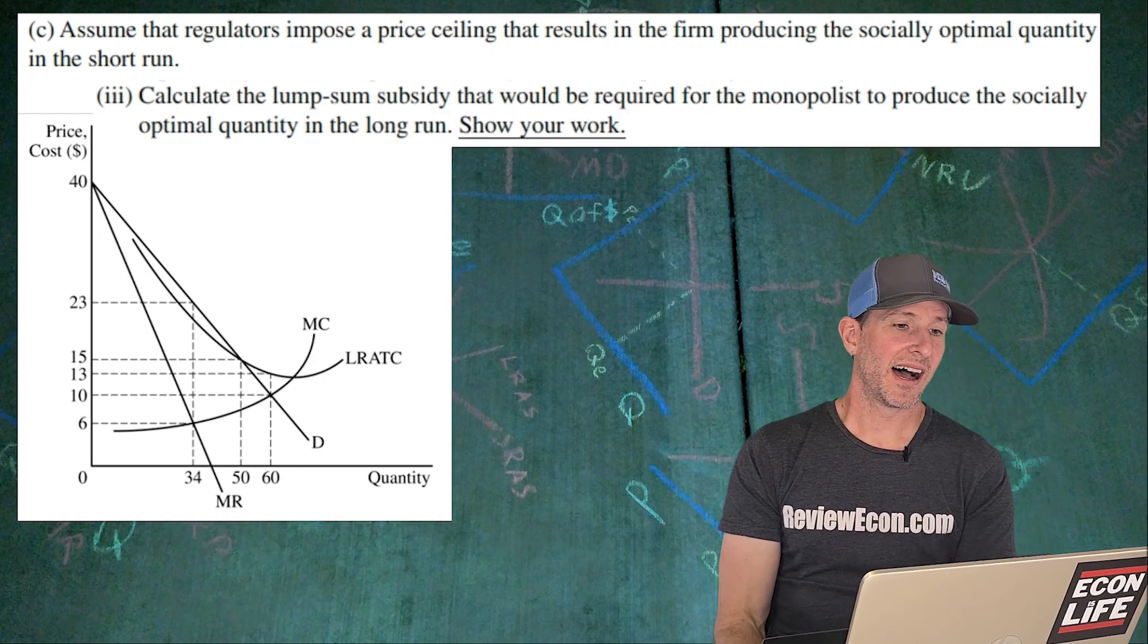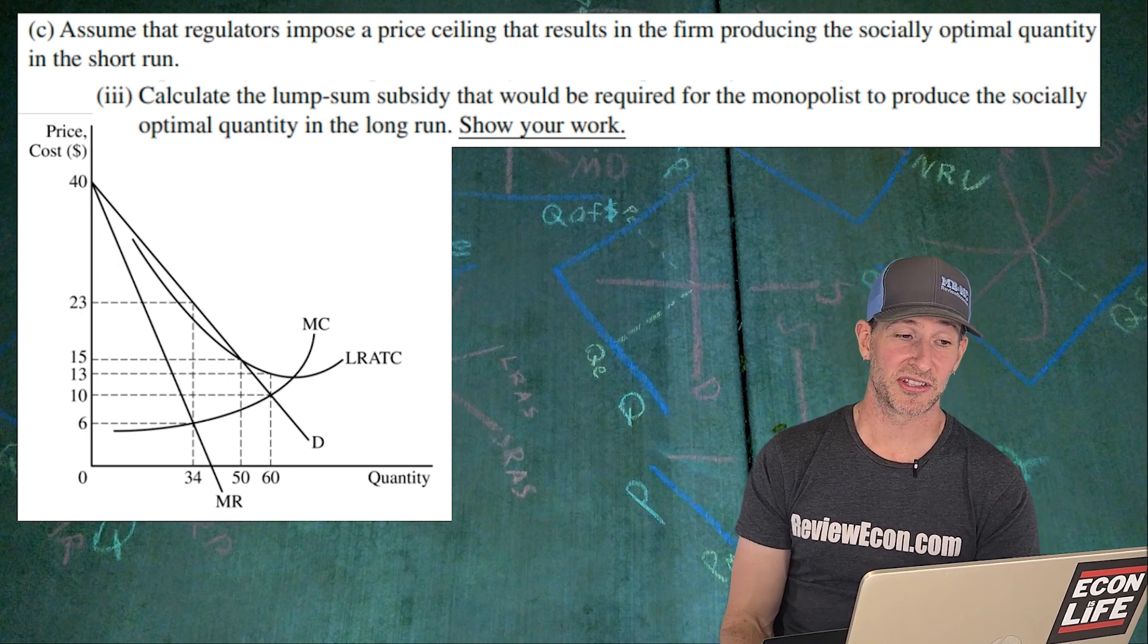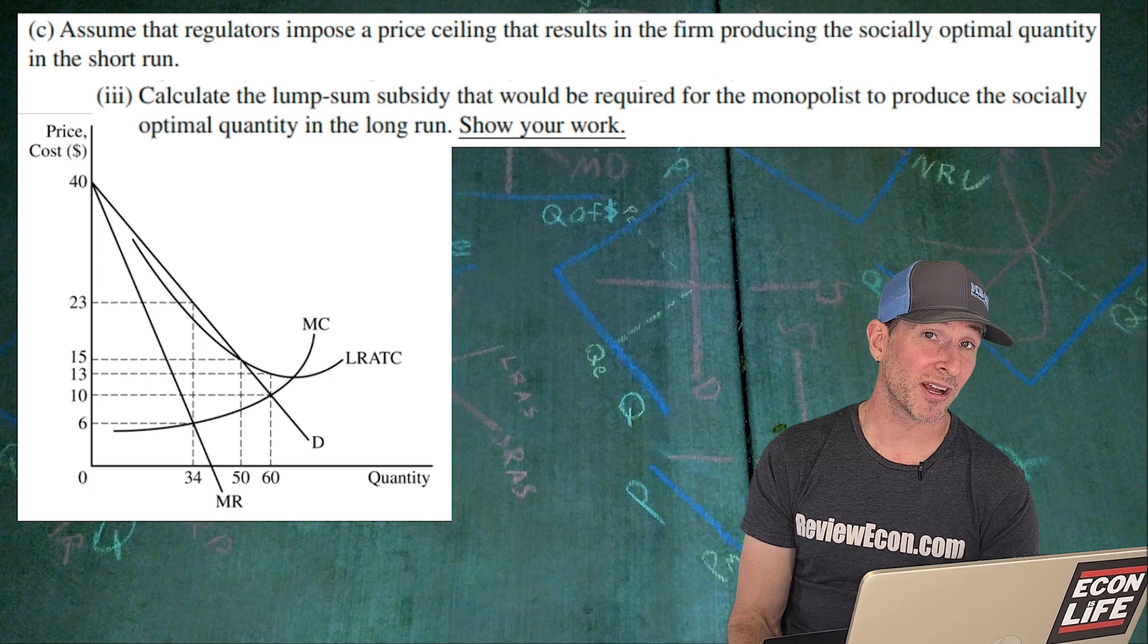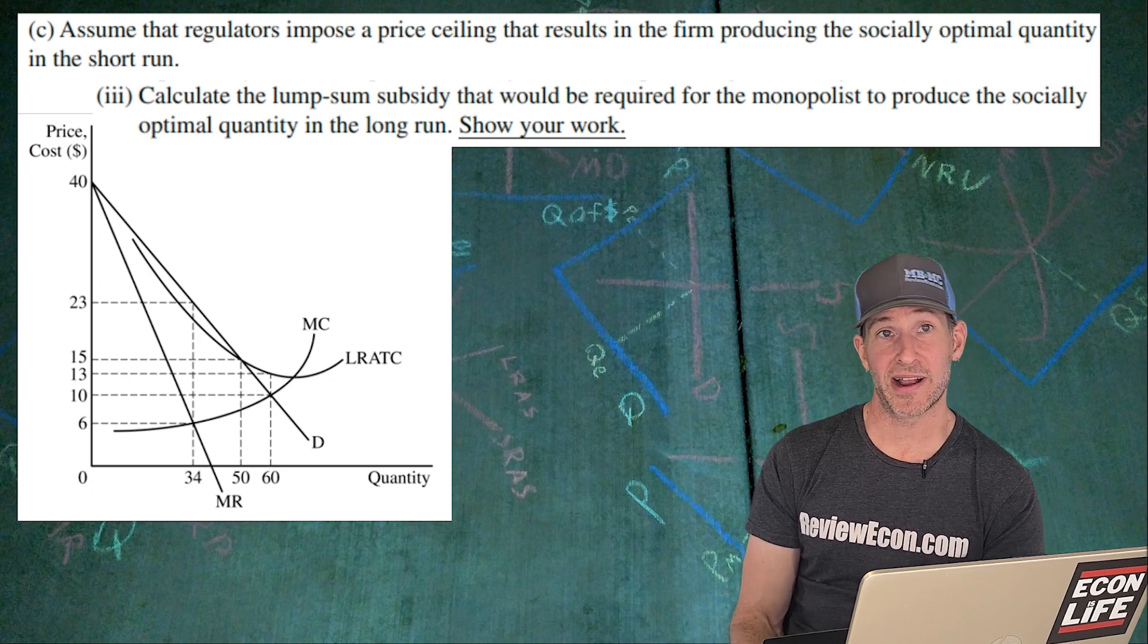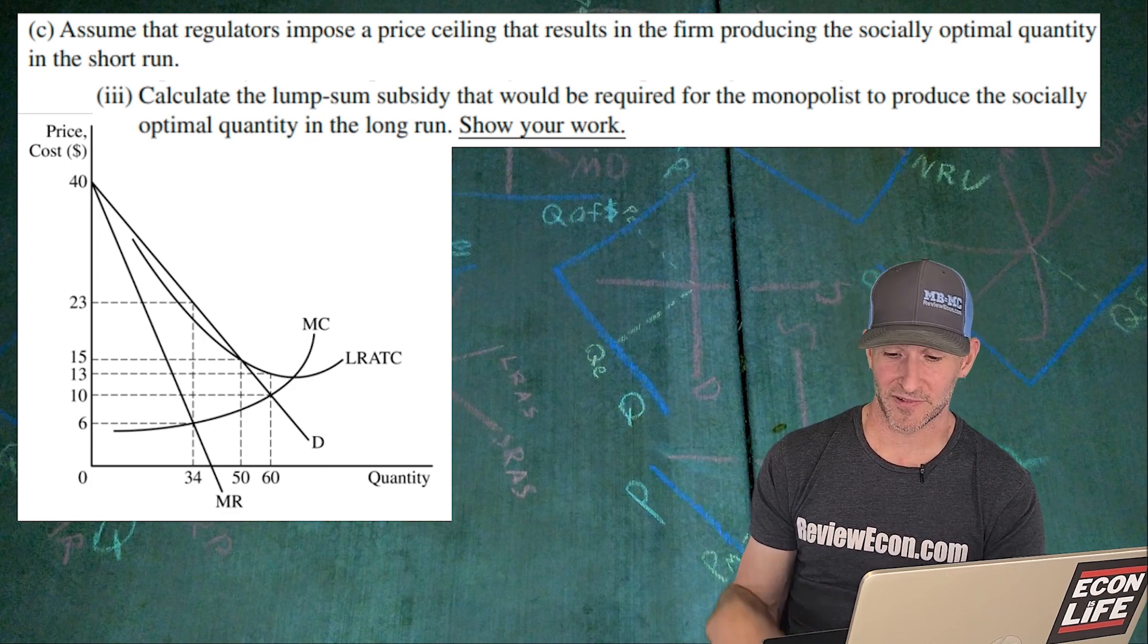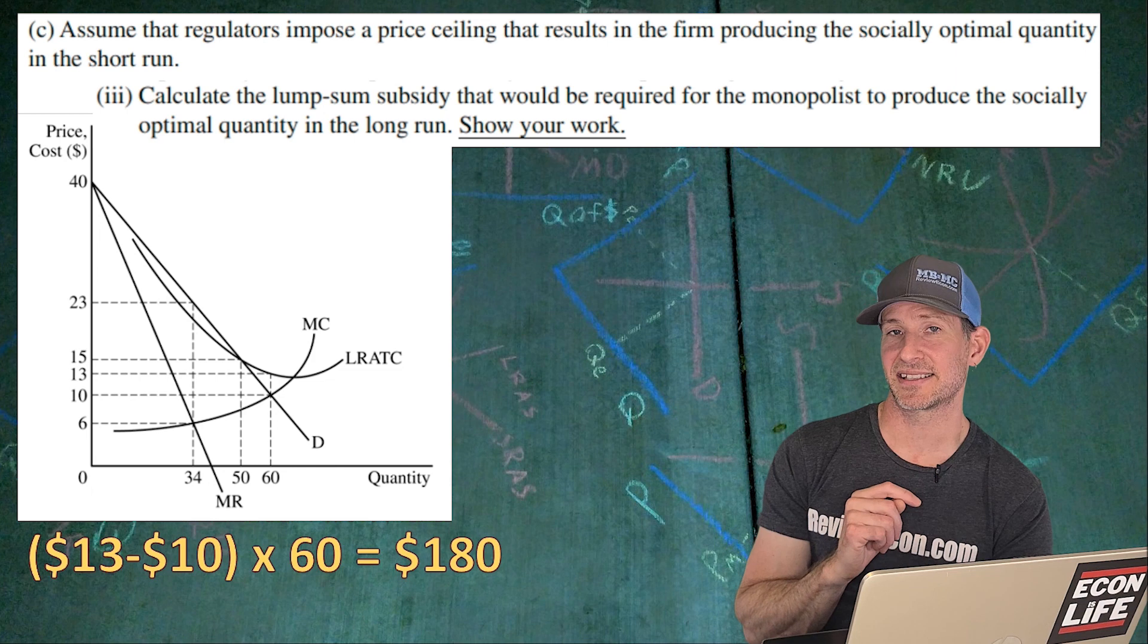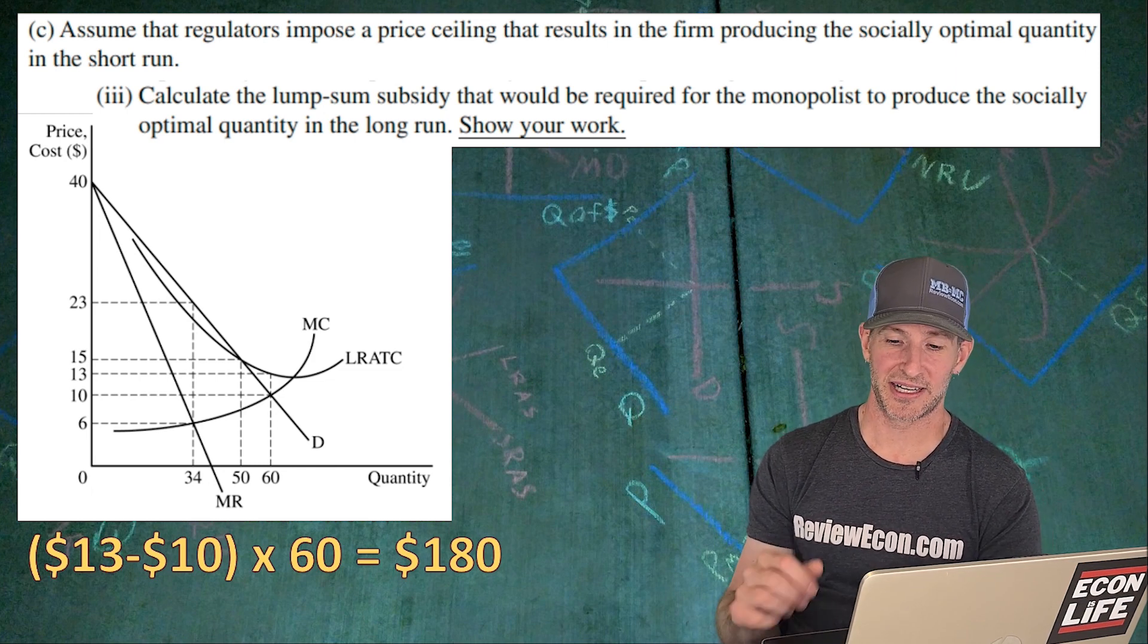On to the last part. We're going to calculate the lump sum subsidy that would be required for the monopolist to produce the socially optimal quantity in the long run. Show your work. We're just calculating the area of economic loss. If the firm is provided a lump sum subsidy equal to their economic losses, now they're breaking even and they're not going to exit the market. So the amount of economic loss is 13 minus 10. That's $3 per unit of economic loss times the 60 units being produced there. And that gives us $180 for that lump sum subsidy. And there you go. There you have it.